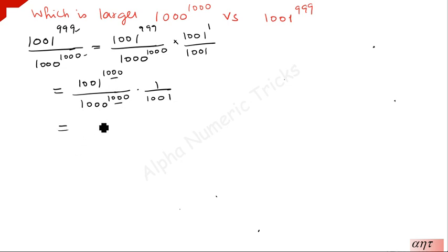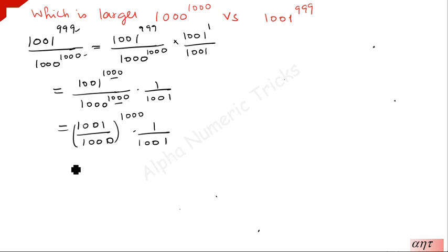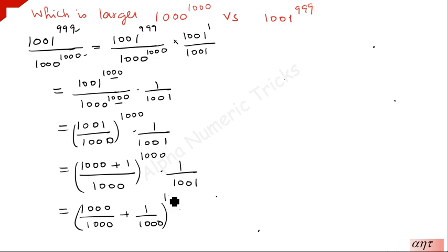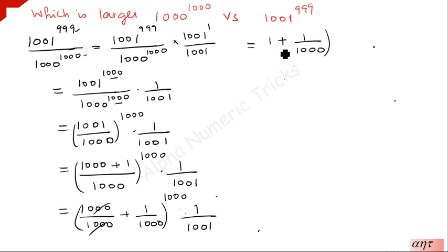Since both powers are now the same, you can write this as (1001 over 1000) to the power 1000, times 1 over 1001. You can also split it as (1 plus 1 over 1000) to the power 1000, times 1 over 1001.